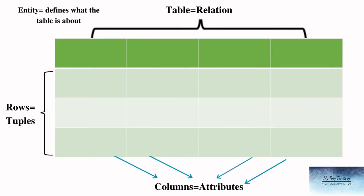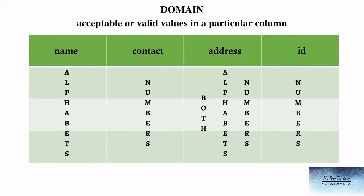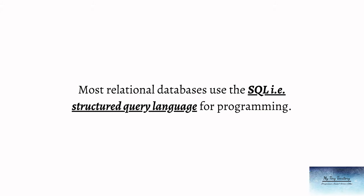Rows represent a single record or one particular entry of data, and rows are called tuples. We cannot just fill any value in any row or column — we need to define a domain. Domain represents the acceptable or valid values in a particular column. For example, a name attribute cannot have numbers, a contact attribute cannot have alphabets, but an address attribute can have both alphabets and numbers. Most relational databases use SQL, that is Structured Query Language, for programming.